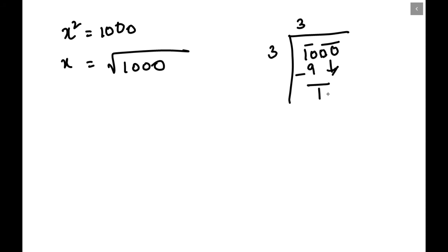1 and 100. We will get the zeros down and we have got 100 now. Now we have to double this first place. That will be 6, because 3 times 2 is 6. If we double 3 we will get 6.